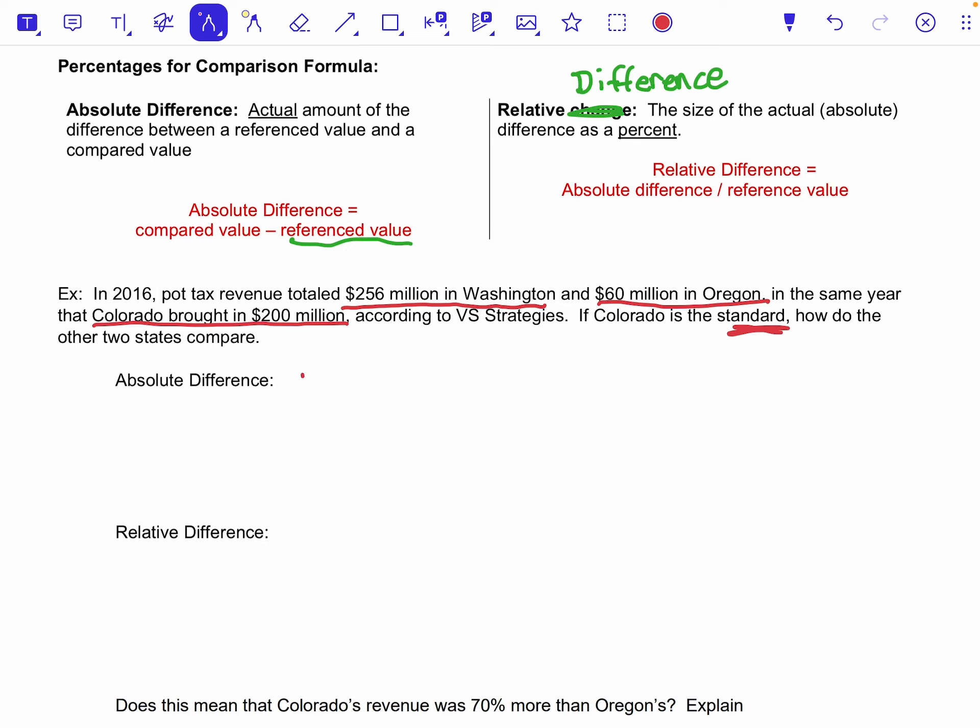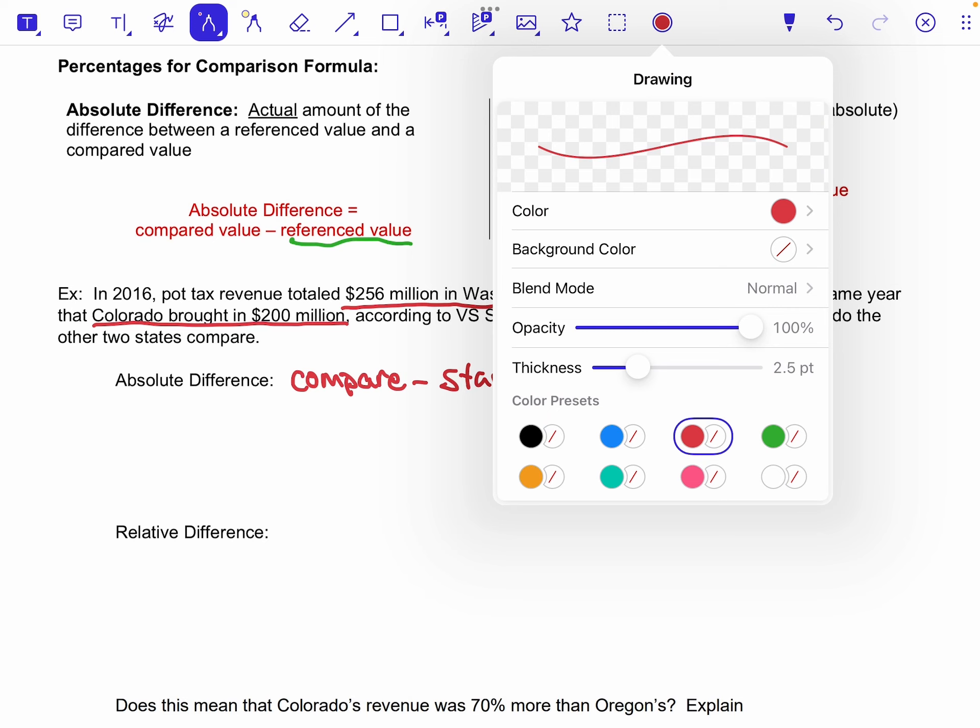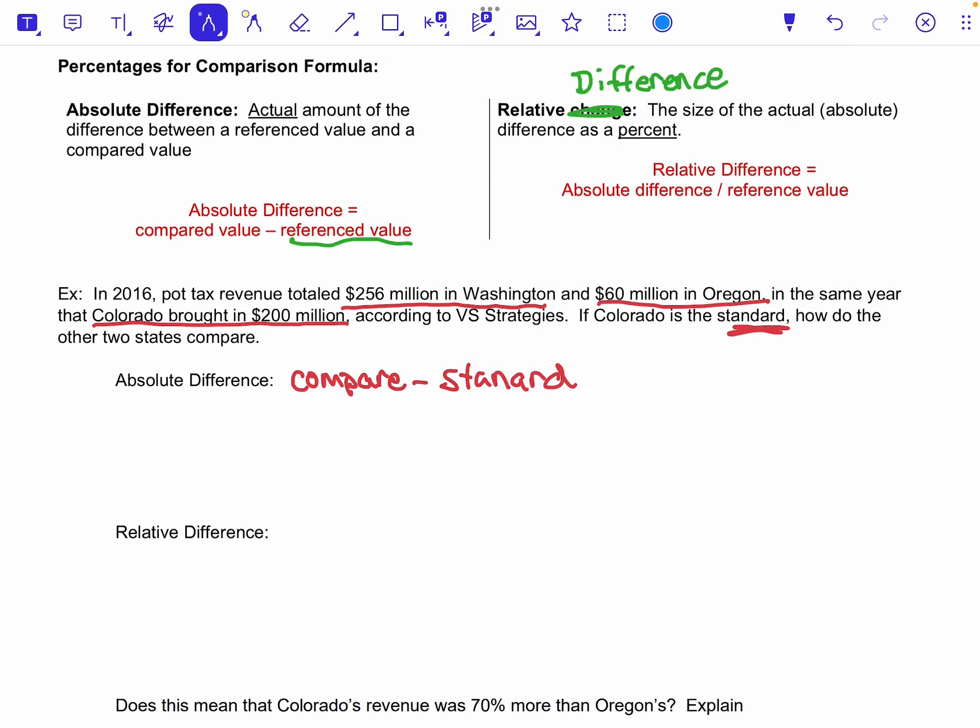And so what happens when you're doing an absolute difference is you're saying the compared value minus the standard. Okay, so let's start with Washington and we're going to do Washington in blue. For Washington then, that was $256 million, so I'm going to do 256 minus the 200 from Colorado.